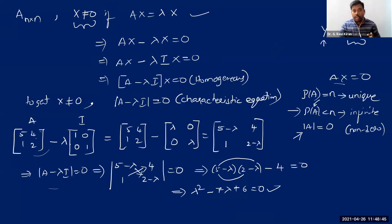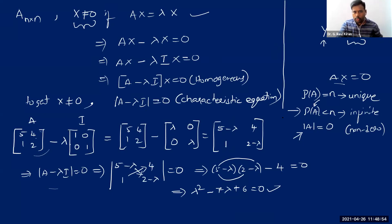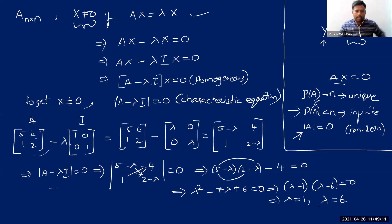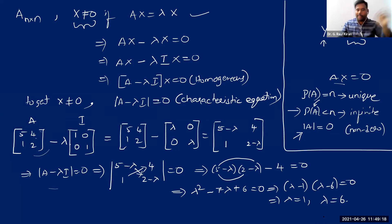The first step in evaluating eigenvalues or eigenvectors is to find the characteristic equation. Solving lambda squared minus 7 lambda plus 6 equals zero: we can factor it as (lambda minus 1)(lambda minus 6) equals zero, giving lambda equals 1 and lambda equals 6. These two values are the eigenvalues of the given matrix.